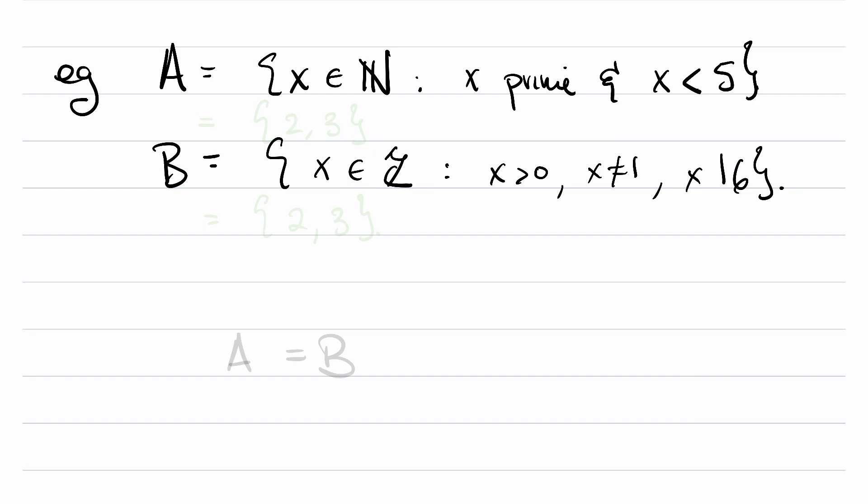So what are the primes that are less than 5? A is going to be the set that contains 2 and 3. And what are the integers that are positive, not 1, and divide 6 without remainder? These are the integers 2 and 3. Every element of A is an element of B, every element of B is an element of A. And of course, as we expect, we get A is equal to B.